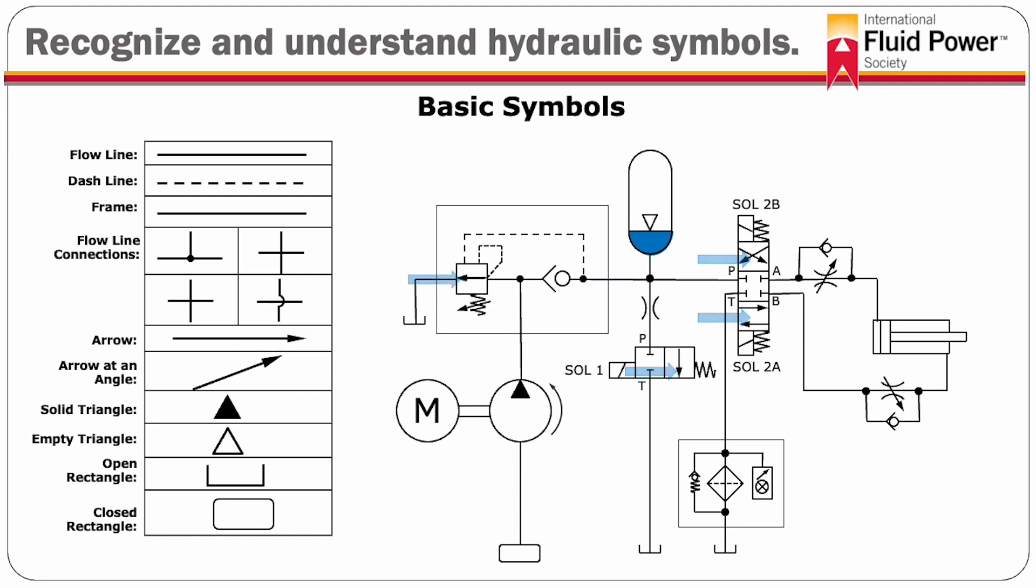Arrow. An arrow indicates the intended direction of flow. It does not indicate whether the flow is hydraulic or pneumatic. Arrow at an angle. An angled arrow passing through another symbol indicates the capability of adjustment or that the component is variable.